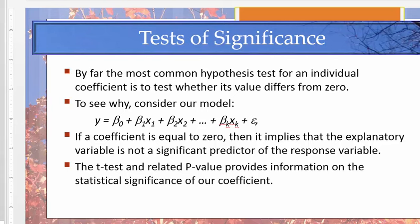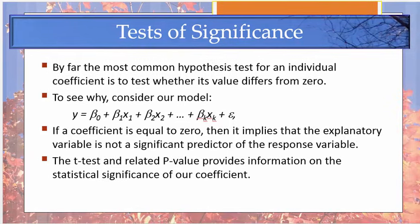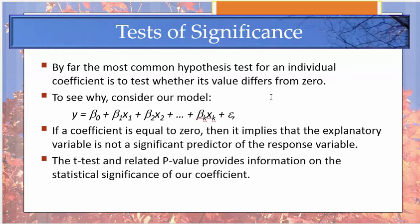So by far the most common test we run with a regression model is to test whether or not the slopes are equal to zero. So almost always our null hypothesis is that the slope equals zero, and then our alternative is going to be that it does not equal zero. The next test that we're going to talk about, the t-test and the related p-value, tells us whether or not our coefficient has statistical significance or not.